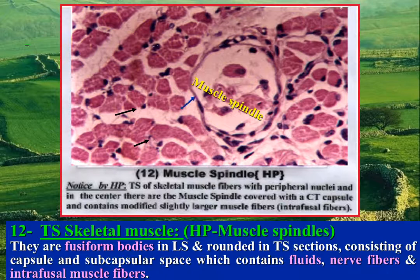Each muscle spindle is composed of a capsule, a subcapsular space containing fluid, intrafusal muscle fibers, and nerve fibers.